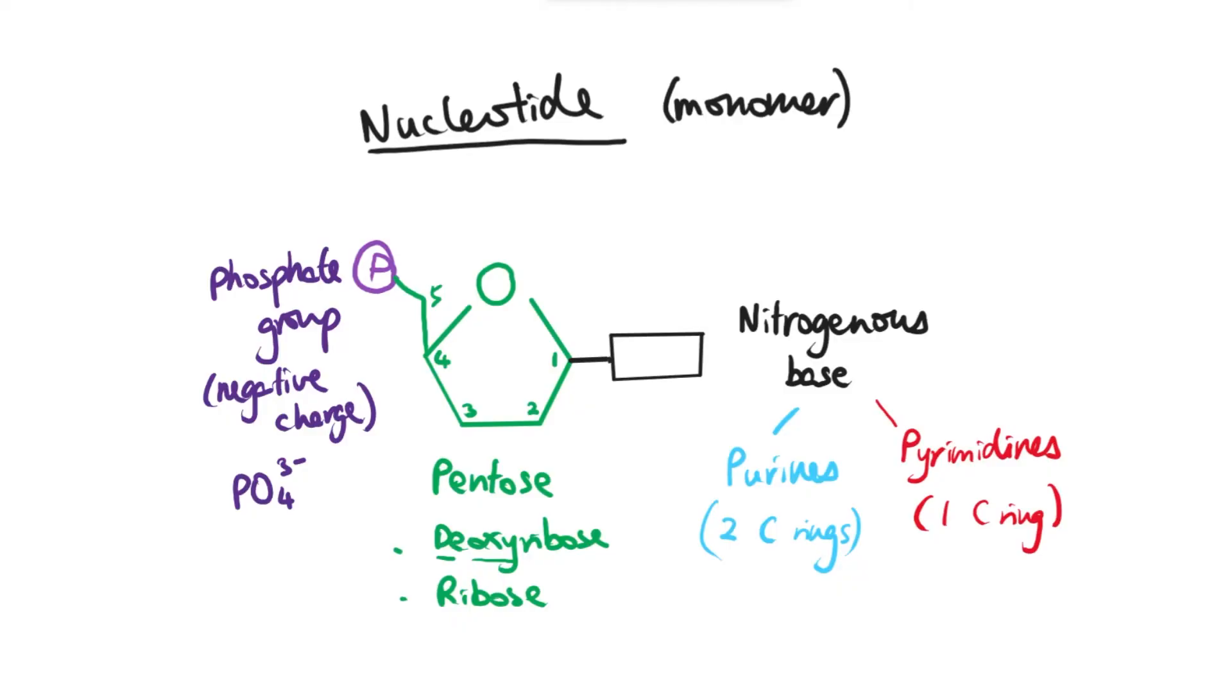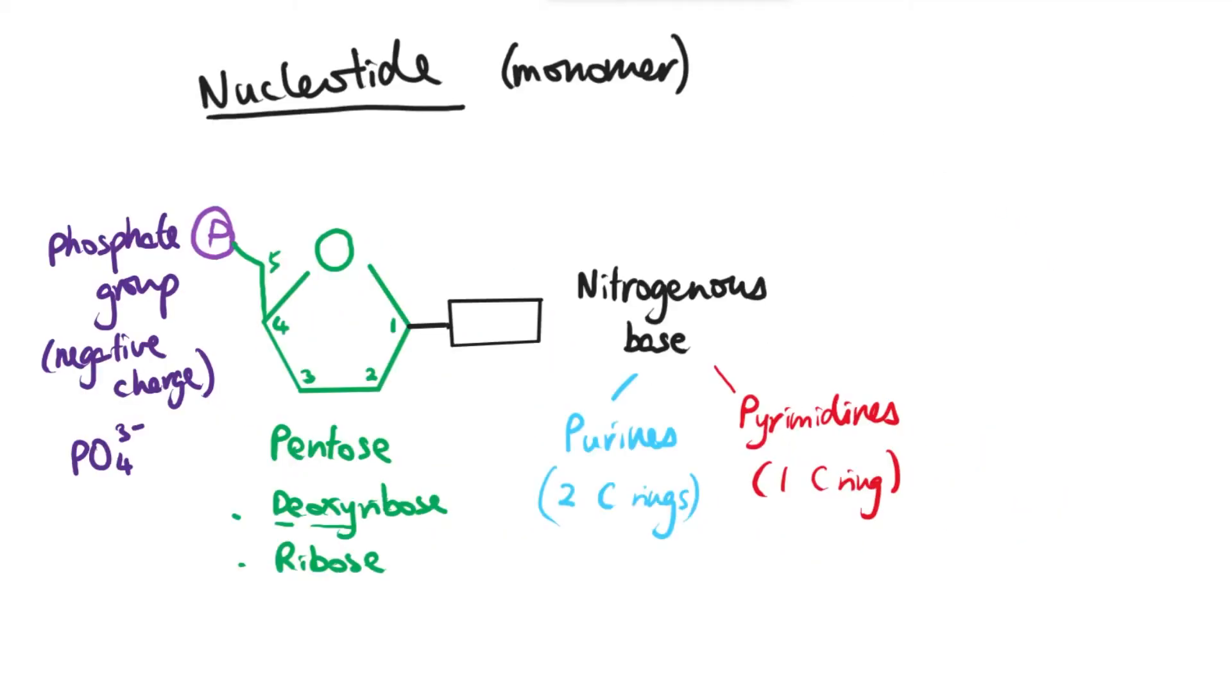The way that I remember it is by thinking about the opposite. So the longer the name of the base, the smaller the structure. So pyrimidines is a longer word so it's got a smaller one ring, one carbon ring structure, whereas purines is a shorter word and it's got a bigger structure so it's two carbon rings. It doesn't matter how you remember it, that's just how I remember it, but come up with a way to help yourself to remember this better.